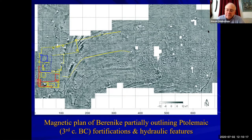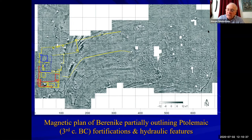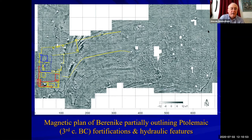Berenike was founded around 275 BC by the Ptolemaic monarch Ptolemy II Philadelphus. The Ptolemies were a dynasty established in Egypt after the death of Alexander the Great — Ptolemy I was in fact one of Alexander's generals. Ptolemy II founded a number of ports along the Egyptian Red Sea coast and further south. On our magnetic map you can see an outline of the Hellenistic, that is the Ptolemaic period, fortifications and some of the other buildings that we have excavated.